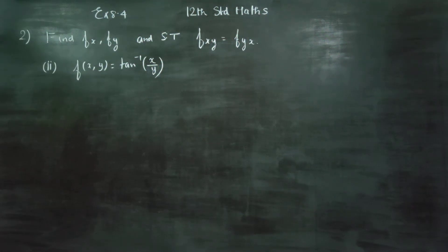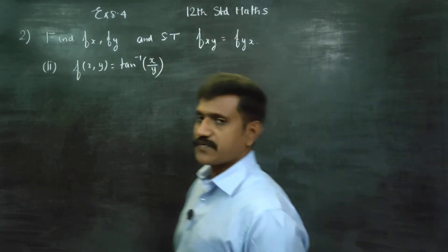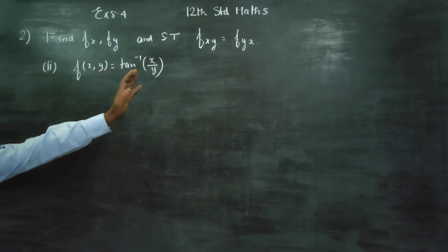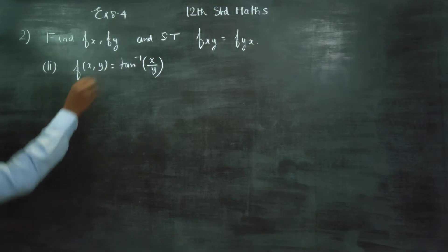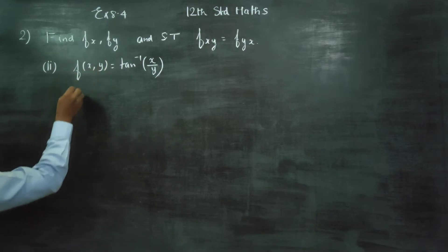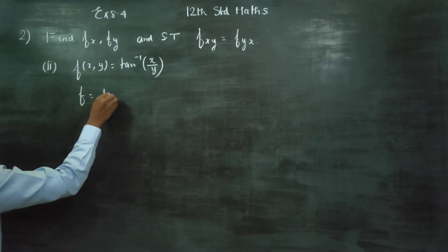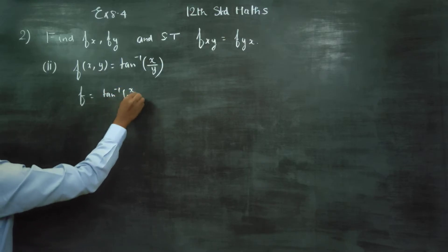Dear Toll Standard students, in Exercise 8.4, Sum number 2, second subdivision, you have to find the values of fx and fy as well as fxy equal to fyx — you have to show that. Let us consider this as f. f is equal to tan inverse of x by y.